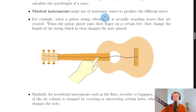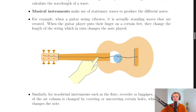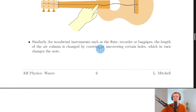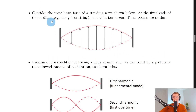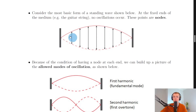Musical instruments make use of stationary waves to produce different notes. When a guitar string vibrates, it is actually standing waves that are created. When the player puts their finger on a certain fret, they change the length of the string, which changes the note played. Similarly, for woodwind instruments such as the flute, recorder, or bagpipes, the length of the air column is changed by covering or uncovering holes. At the fixed ends of the string, no oscillations occur — these points are nodes — with one antinode in between.